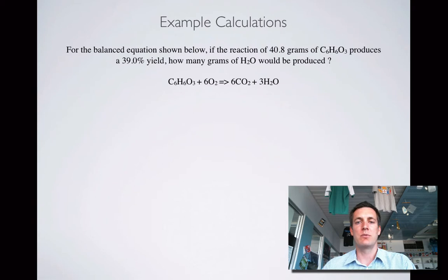We are told that we've got 40.8 grams of this substance C6H6O3 and we're being asked to find the mass of water that forms. Again we know that is the number of moles times the molar mass, but what we're also told here is that we're only going to make 39% of what we ought to have made according to the stoichiometric ratio.